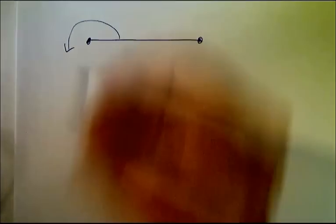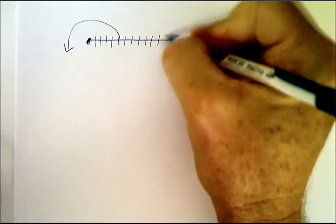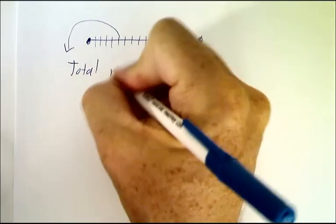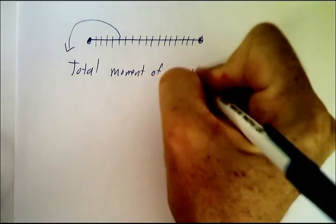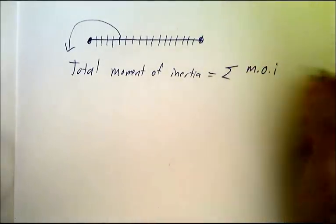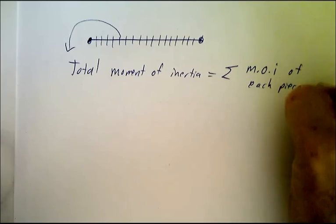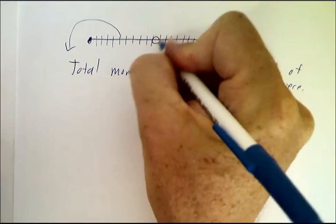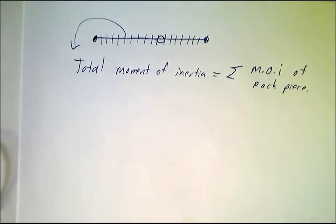So instead, you break the rod into a bunch of little pieces. And you say, the total moment of inertia is the sum of the moment of inertia of each piece. And then you have to figure out what the moment of inertia is of each piece. Well, you have to figure out what is the mass of each piece, and multiply it by the distance squared, and you get the moment of inertia of each piece.